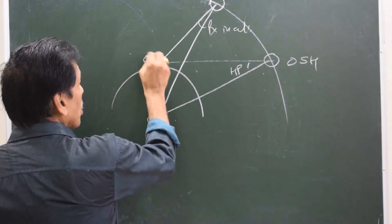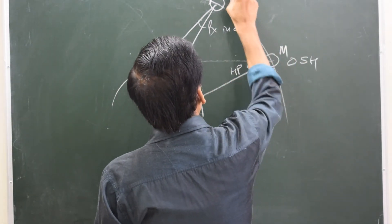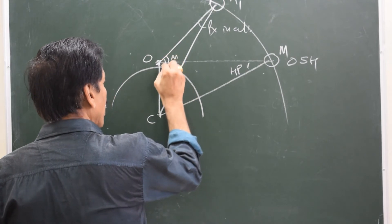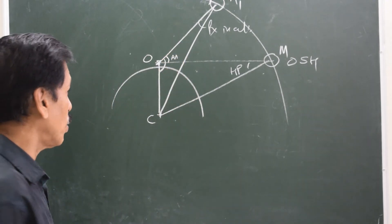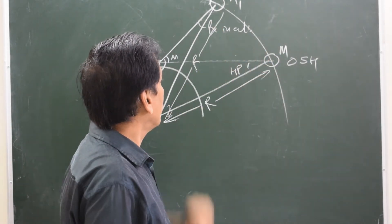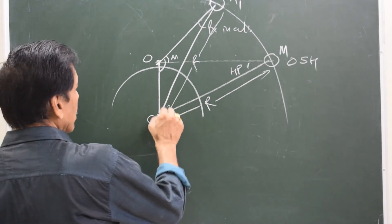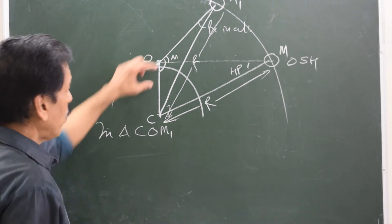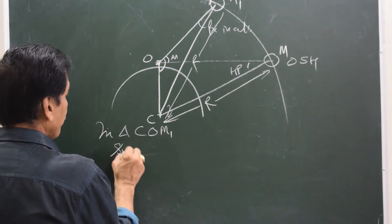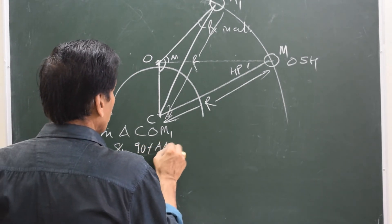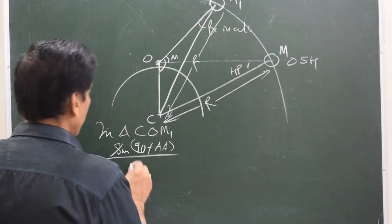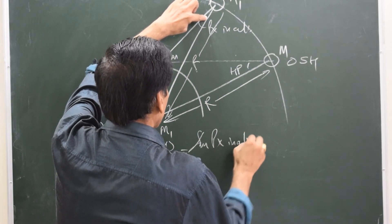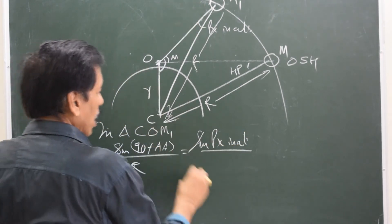Let us say this is the center (C), this is the observer (O), and this is the moon (M1). If this angle is the apparent altitude, then this particular angle is 90 plus apparent altitude. This is the radius R of the moon's orbit. Considering triangle COM1 — sine of (90 plus apparent altitude) divided by opposite side R, is equal to sine of parallax in altitude divided by opposite side small r, which is the radius of the earth.